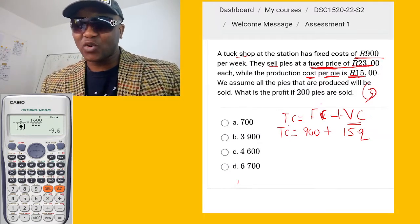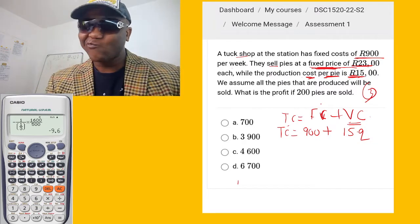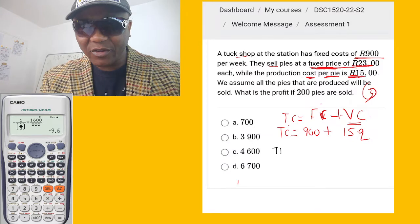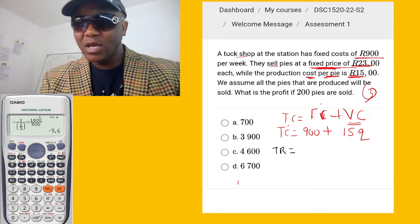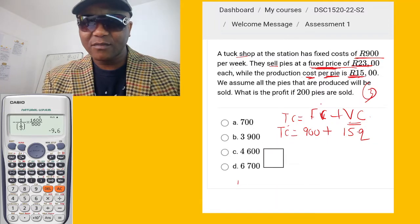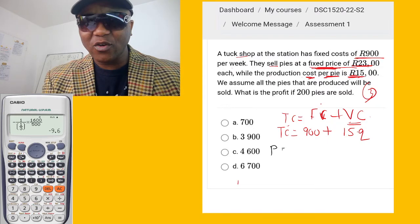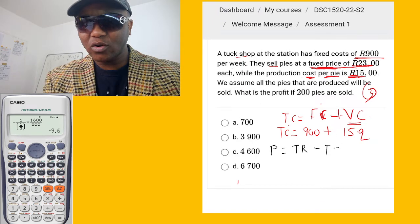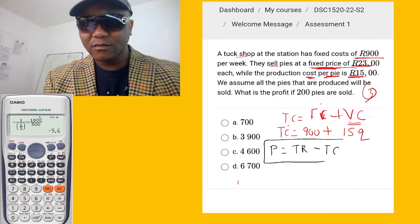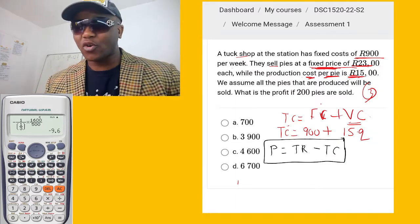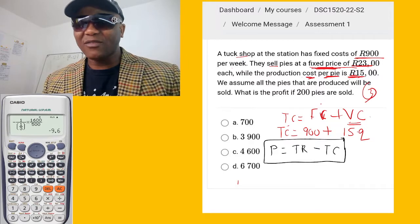Let me explain about profit. Profit, if you want to get profit of anything, take total revenue minus total cost. Profit of anything, you take total revenue minus total cost.